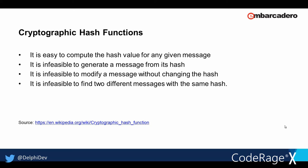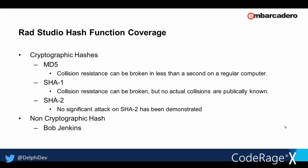It's infeasible to modify a message without changing its hash — if I have a message '123' and another '1234', they will have different hashes. It's also infeasible to find two different messages with the same hash, so 'ABC' and 'DEF' would never produce the same hash value. RAD Studio currently supports three security-related hashing algorithms: MD5, SHA-1, and SHA-2. Weaknesses have been found in MD5 and SHA-1, so the current recommendation for security purposes is SHA-2.